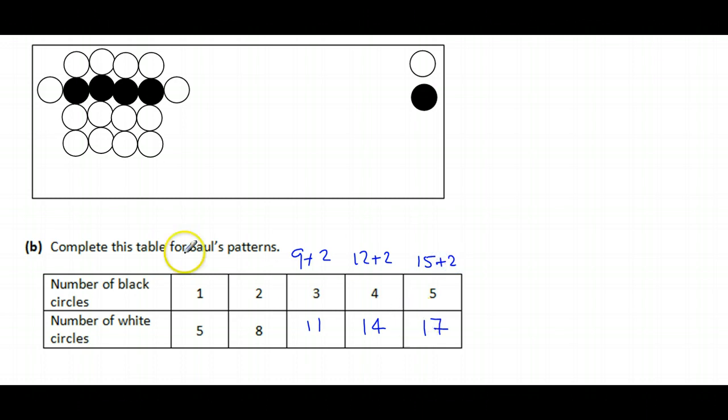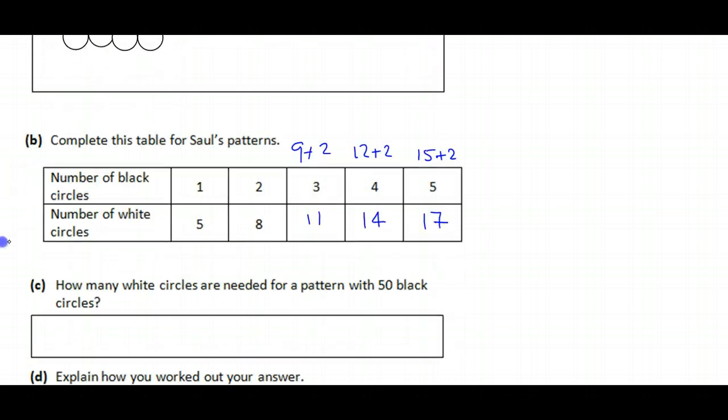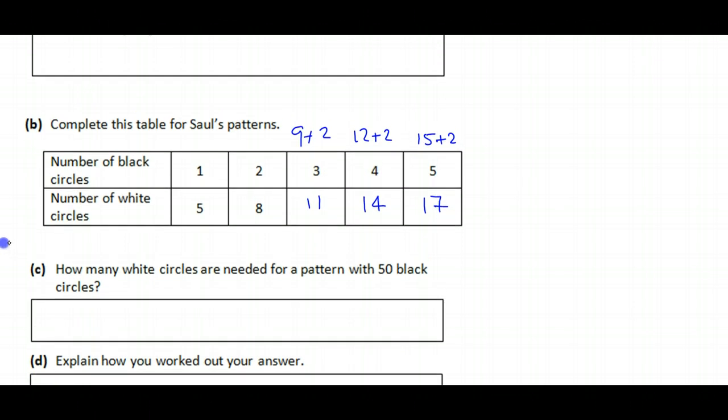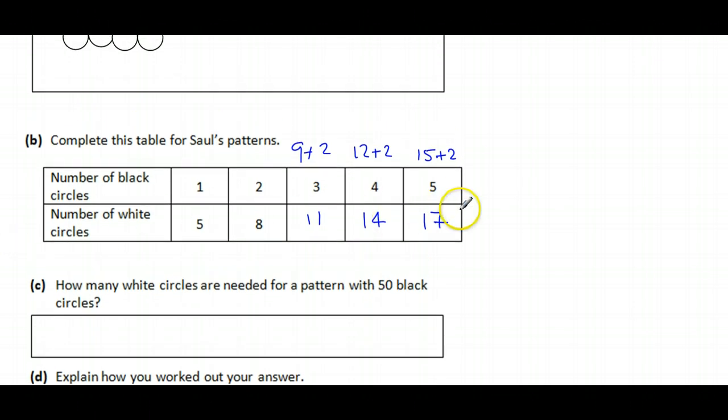There we go. Yeah. How many white circles for pattern number 50? Well, you can't just say it's going to be ten times this. You can't say it's going to be 170, because that doesn't account for the arms at the beginning. We've got to be careful. You can't just say it goes up like that, ten times bigger than this one. It's not true.